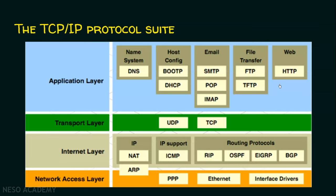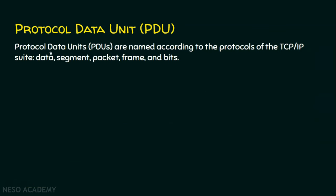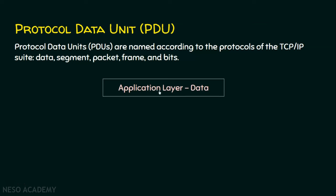Now we will see what is PDU — Protocol Data Unit. Protocol data units are named according to the protocols of the TCP/IP suite. Whatever the user generates from the application layer, that application layer PDU is called simply data. Once transport layer information is added to the application layer data, we call that a segment — the transport layer PDU is called a segment.